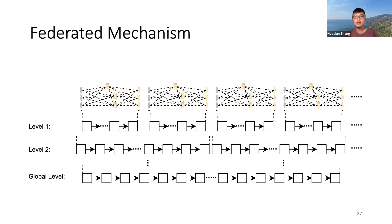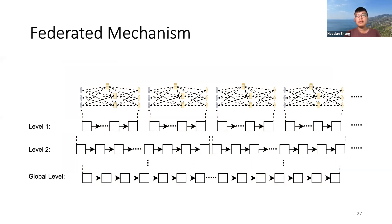However, this simple gathering only works for a small group — potentially less than 100 people. If we want to expand to province, country, or even global level, we have to make it scalable. One solution is to federate the whole process in a multi-layer blockchain system, and this is still ongoing research.